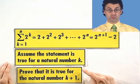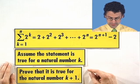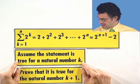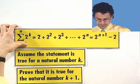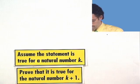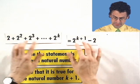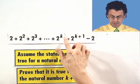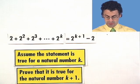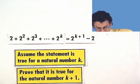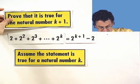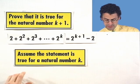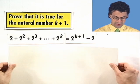We want to show that implies that domino k plus 1 must fall as well. So what does it mean to assume the statement is true for natural number k? What that means is we assume that we have this identity holding. That if we sum out up to k, then we get 2 to the k plus 1 minus 2. And what we want to do now is prove that this exact same statement holds if we change the exponent to k plus 1.